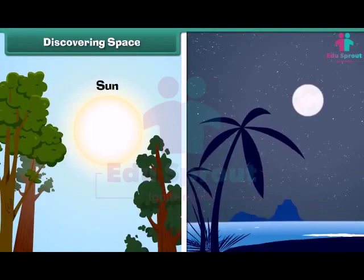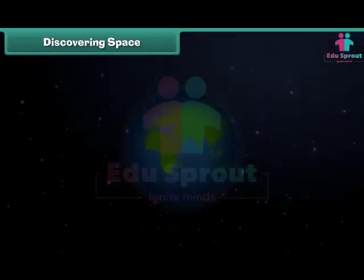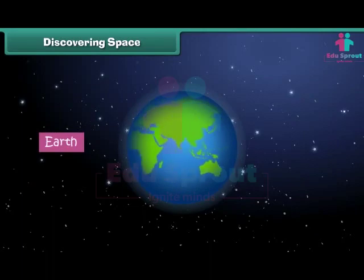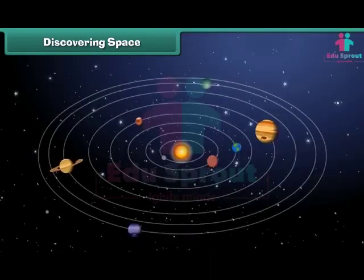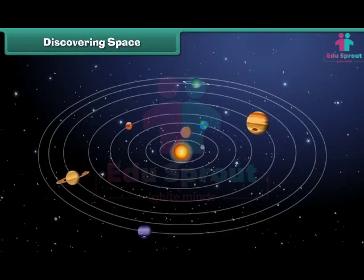The sun, moon and the stars that we see in the sky are all located in space. The earth on which we live is also in space. Everything from the small dust particle to the large planet is placed in space.